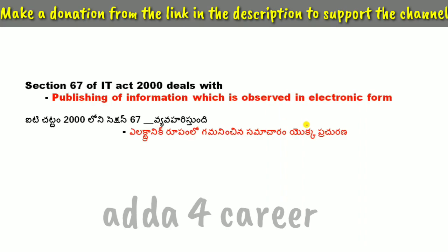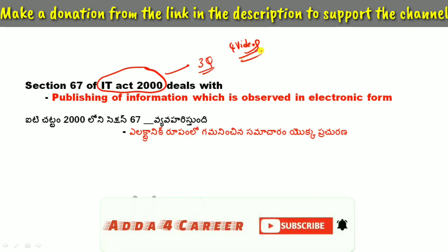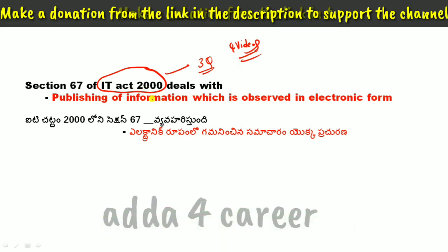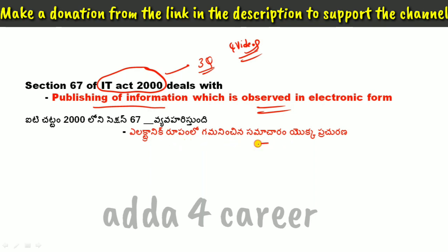Section 67 of the IT Act 2000 deals with the publishing of information which is obscene in electronic form. If you publish obscene information in electronic form, it is dealt with under Section 67 of IT Act 2000.